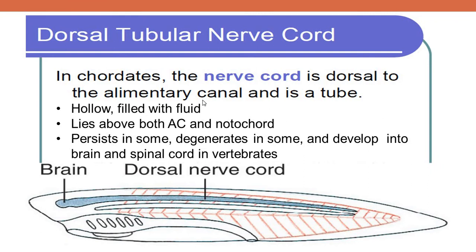The nerve cord is dorsal to the alimentary canal and is a hollow tube filled with fluid, lying above both the alimentary canal and notochord. It persists in some chordates, degenerates in some chordates, and develops into the brain and spinal cord in higher chordates, that is vertebrates.